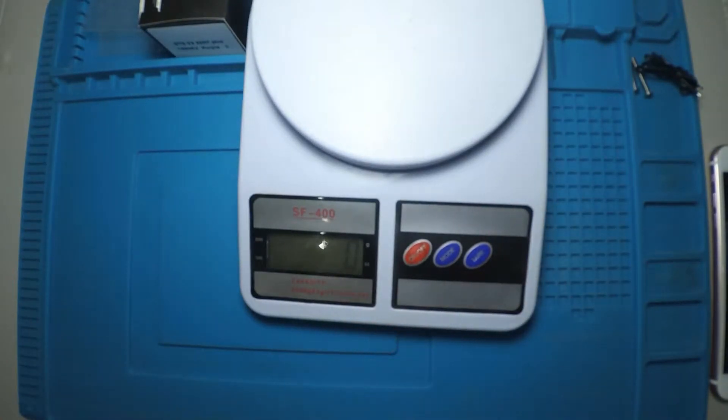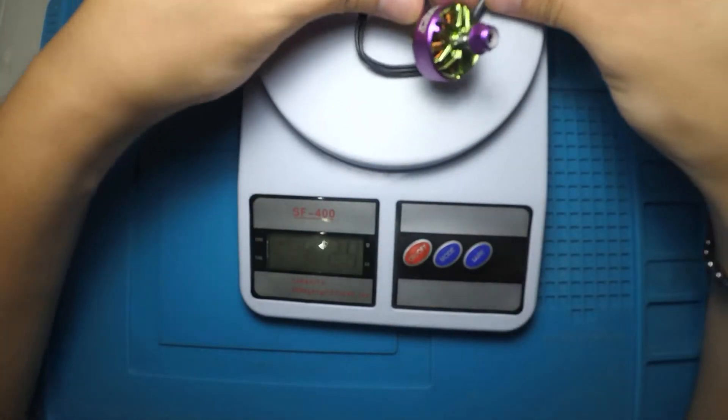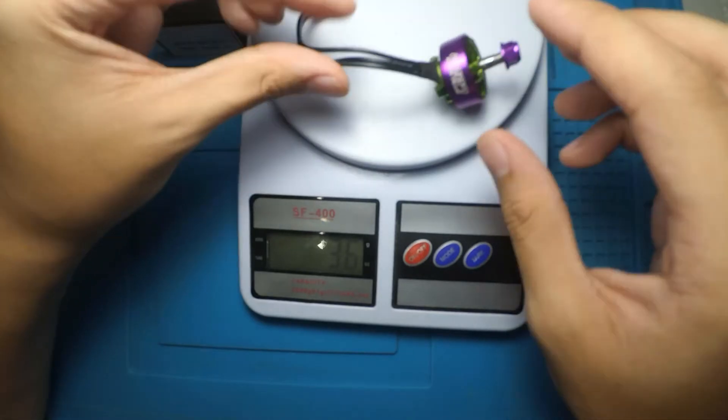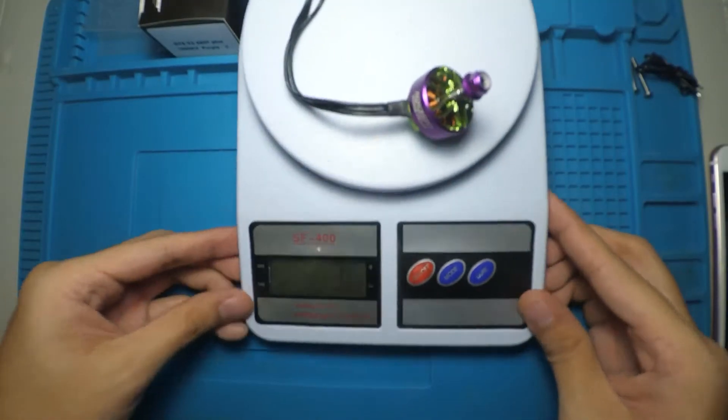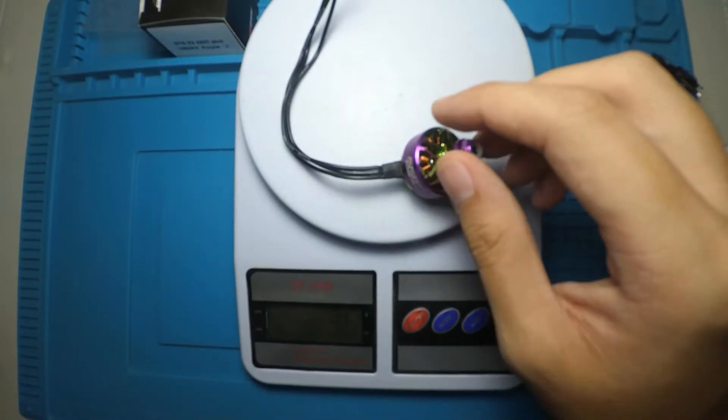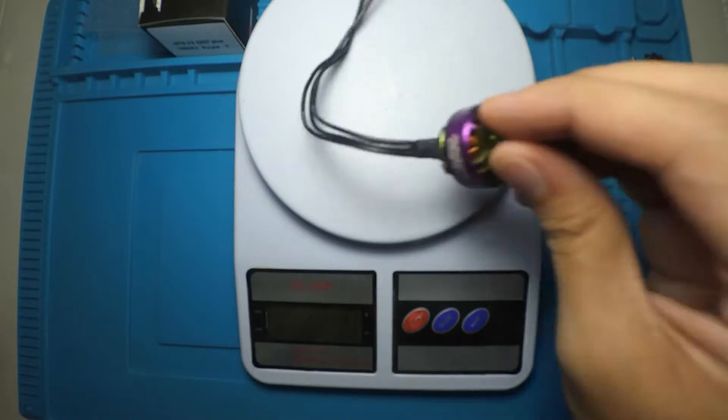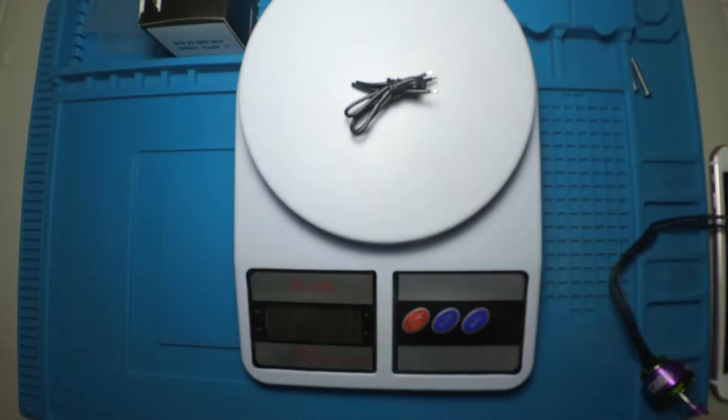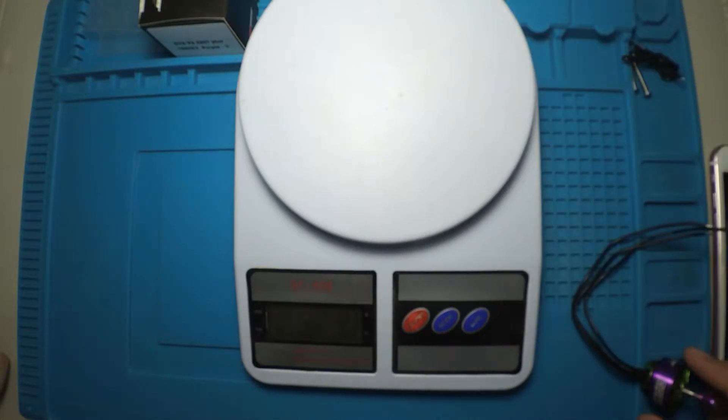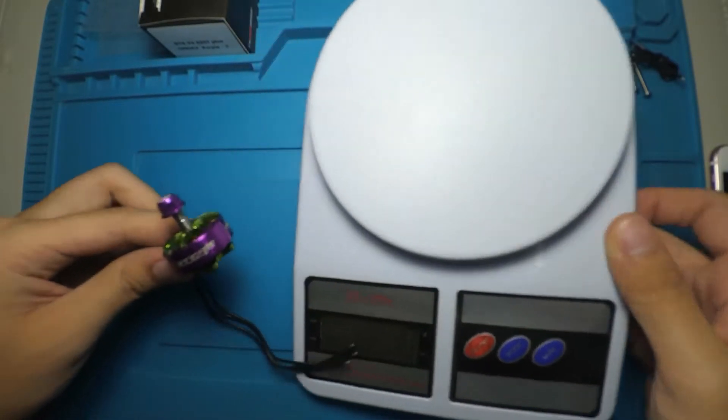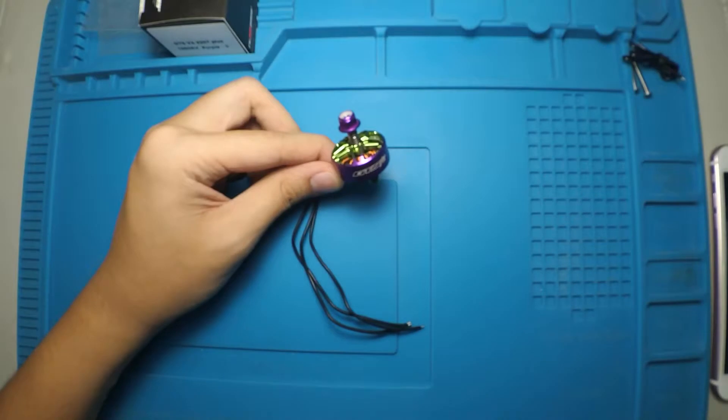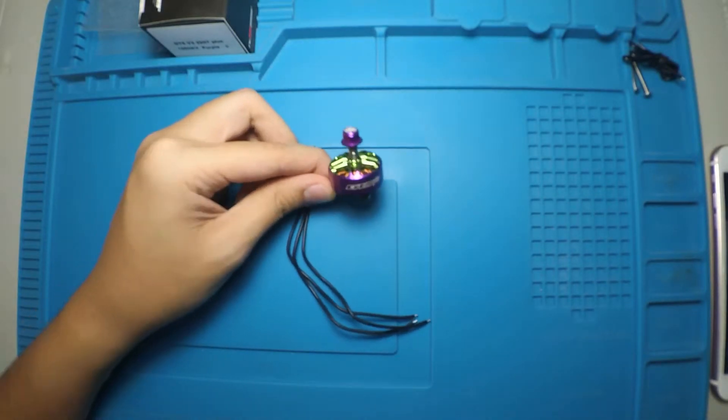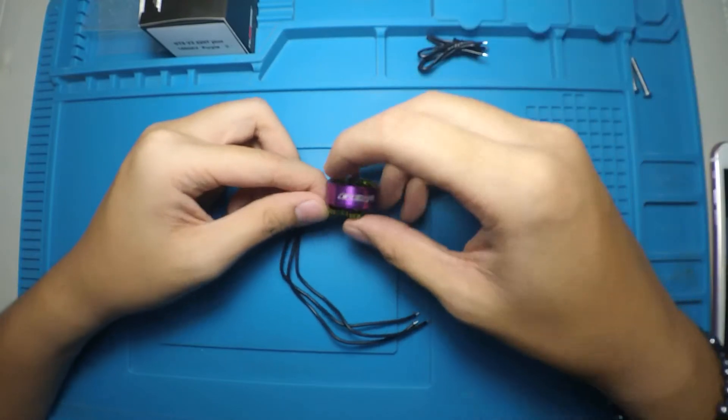With 150 cm length of wire it weighs in around 36 grams. Around 36 grams, and around 130 cm length of wire weighs 33 grams. So this motor weighs in at 33 grams with 130 cm of wire cut off from it.